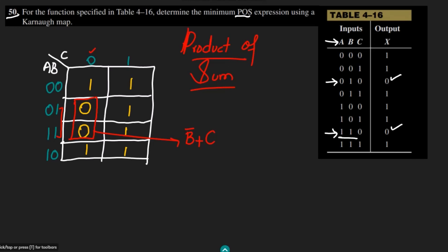There are no other groups which can be combined together in the form of 2s, 1s, 4s, or 8s. Therefore, this is the only term here. The minimum POS expression is B complement plus C. This is the minimum POS expression for our question which we had to find out.